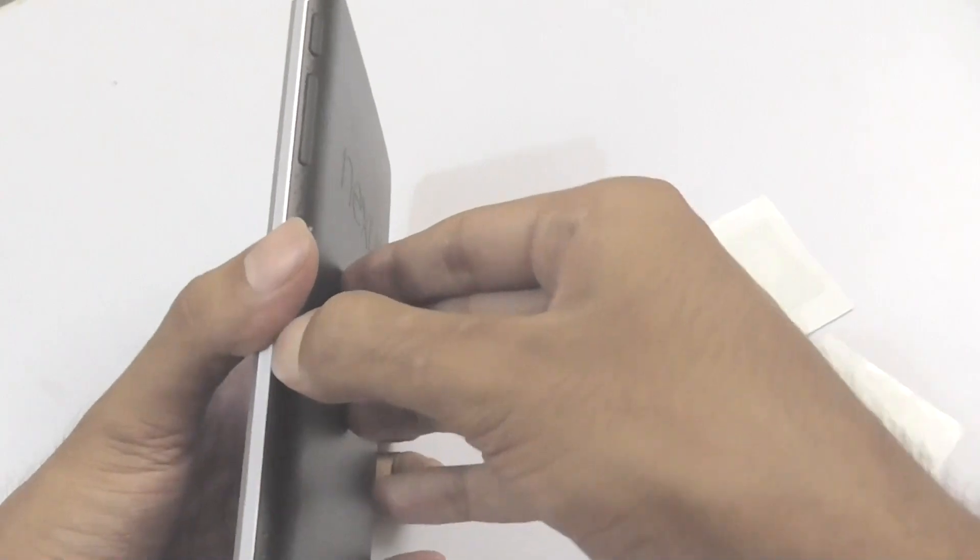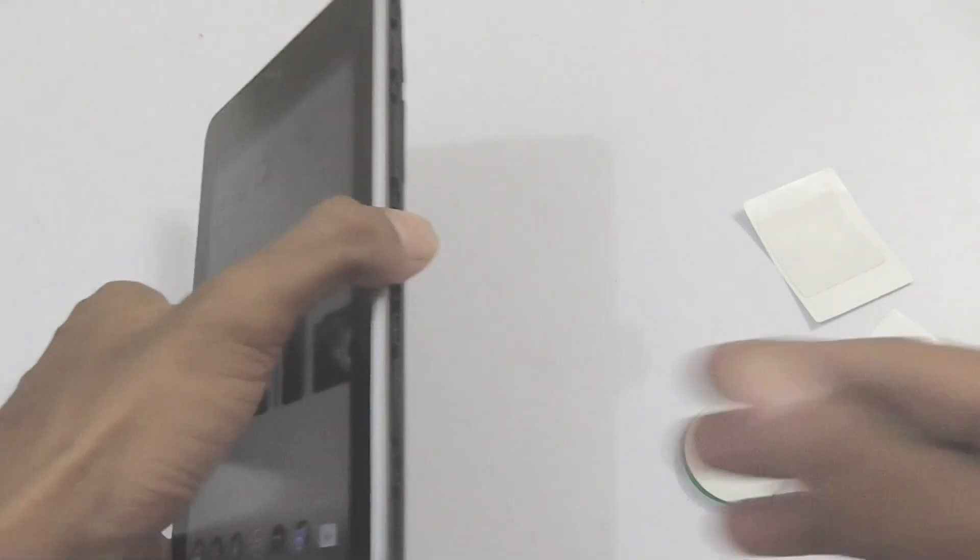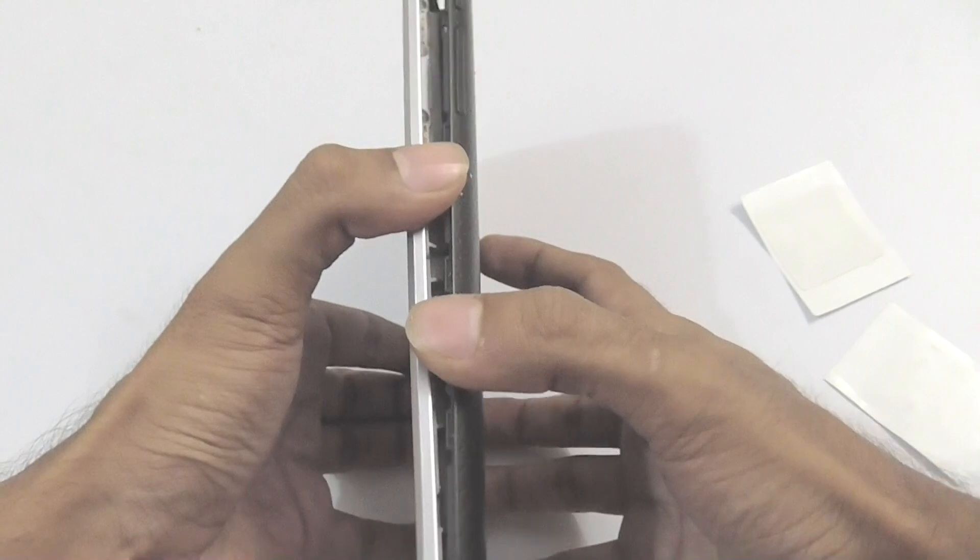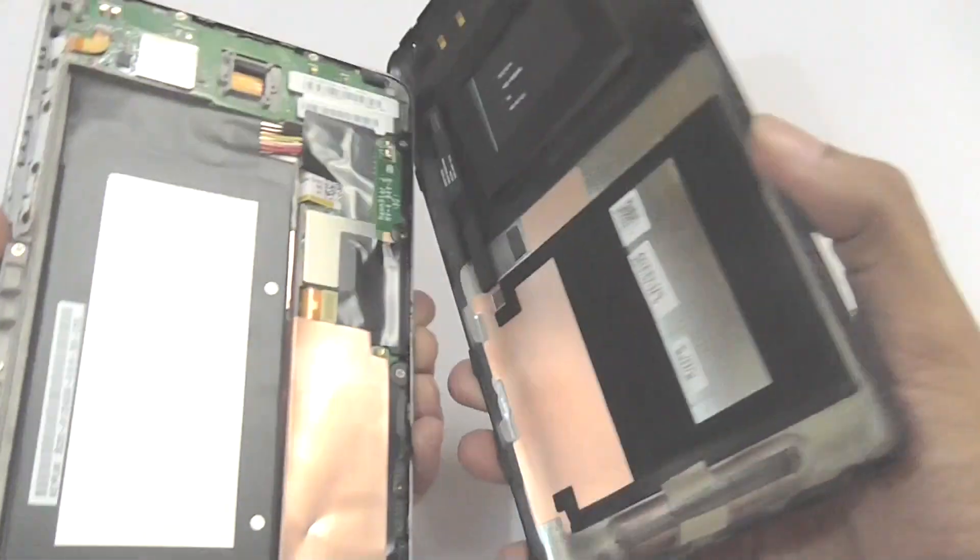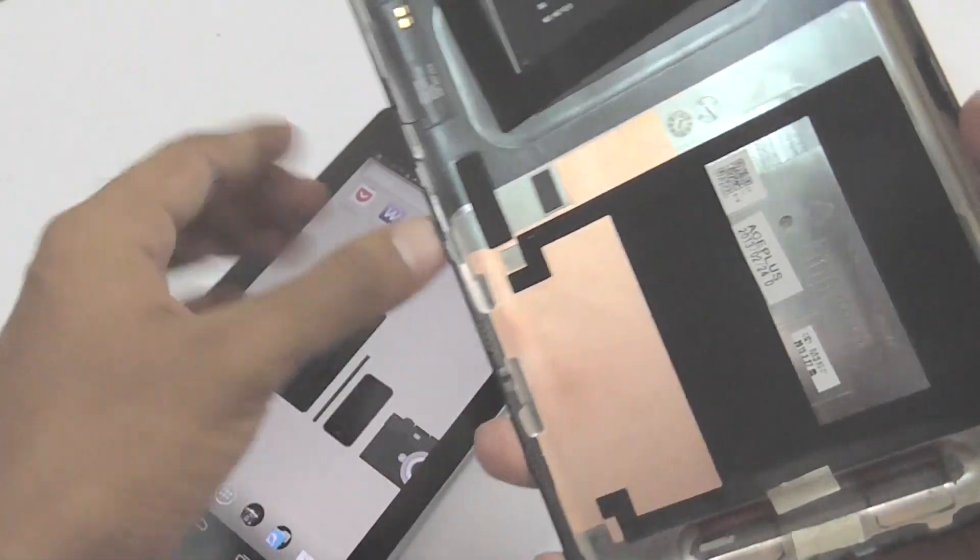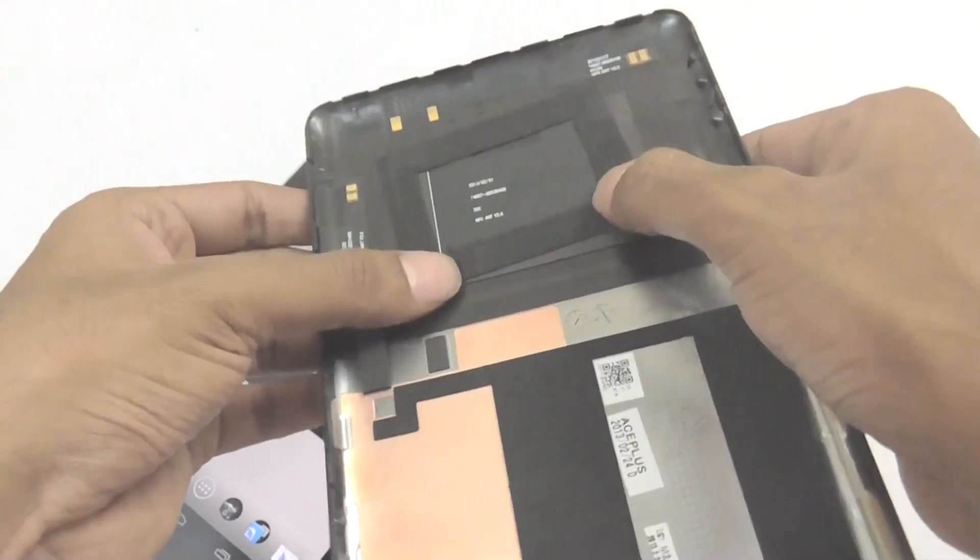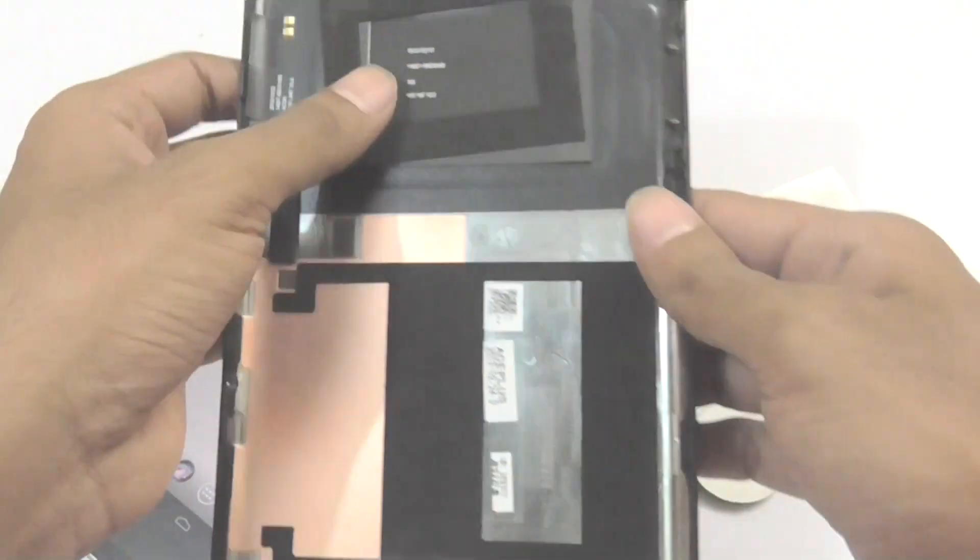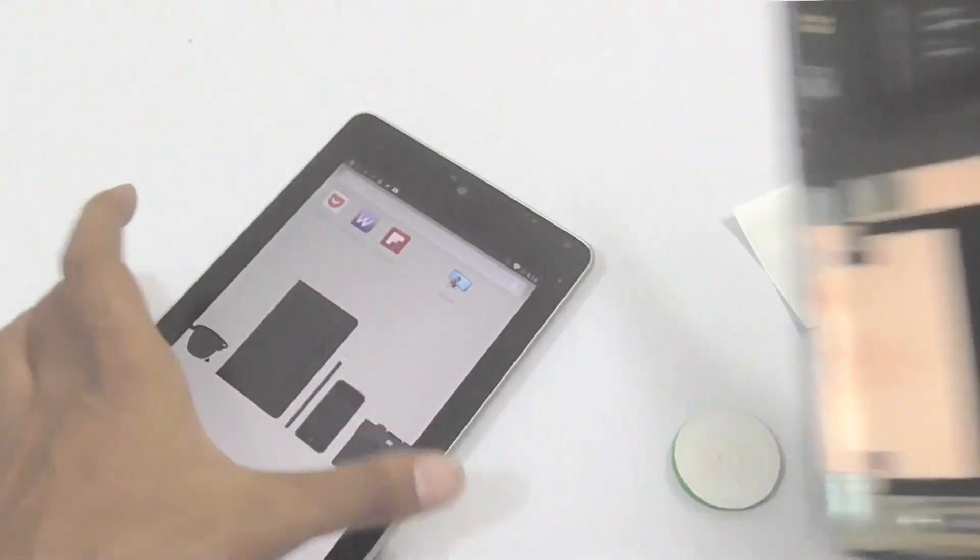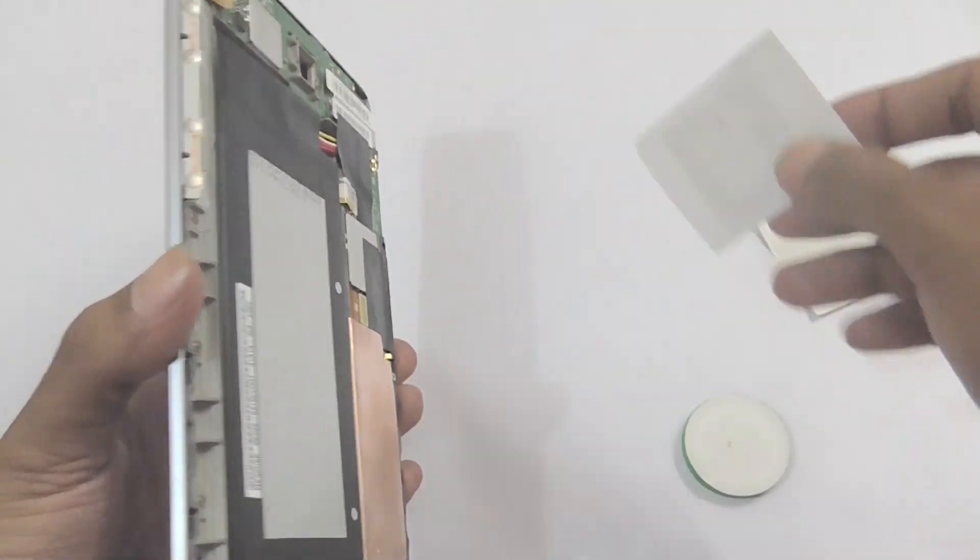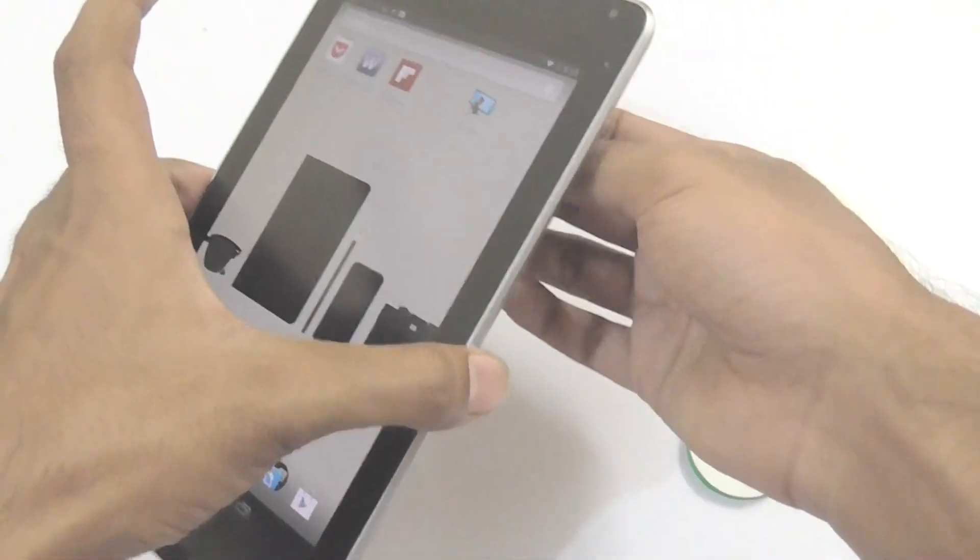But now, if you open the device, let me just pause the video for you. Now, after I remove the back of this Android tablet, you can see that this is a coil for the transmission to take place. And if I remove this and then bring this NFC tag in contact, you see nothing will happen.